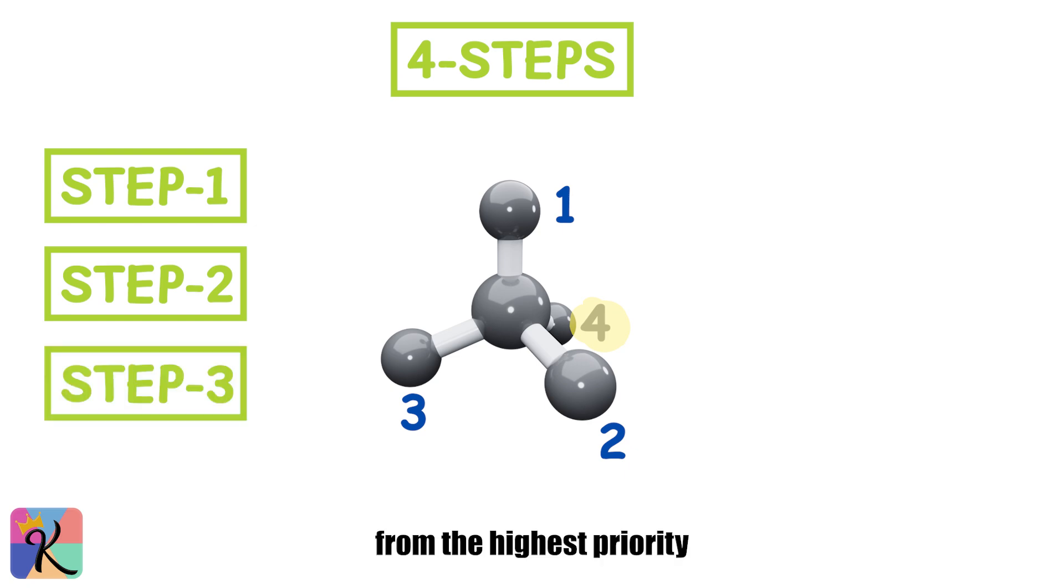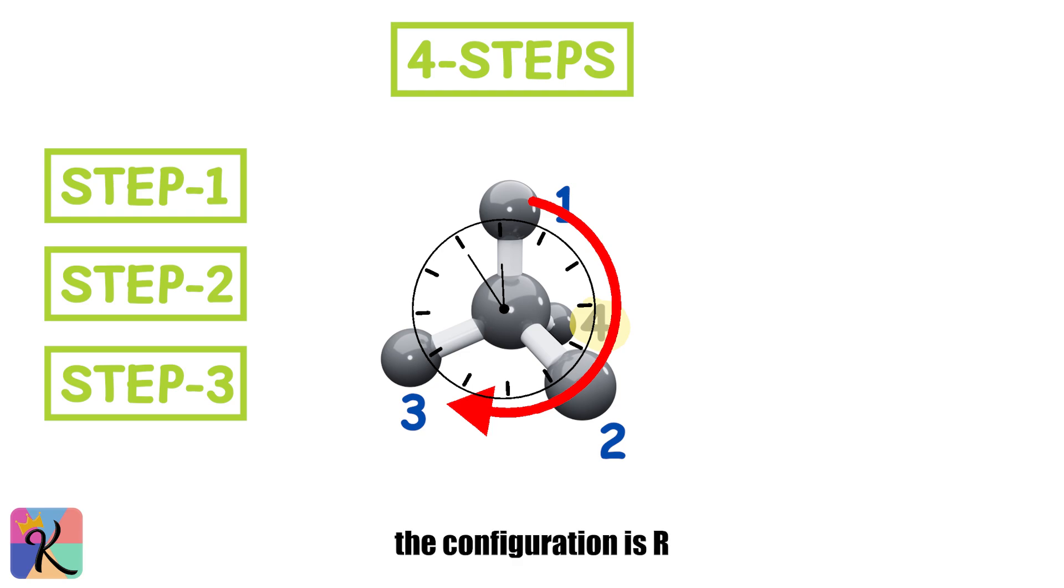Step 3. Draw a circle from the highest priority, 1, to the second, 2, and then to the third, 3. If the circle is clockwise, the configuration is R. If it's counterclockwise, it's S.